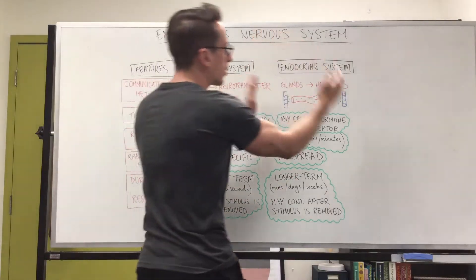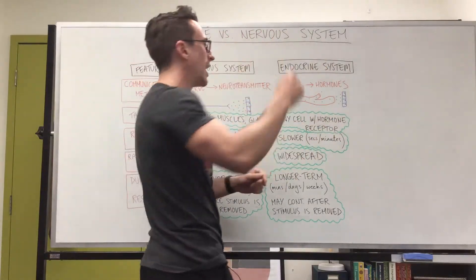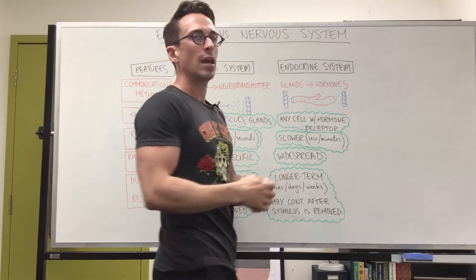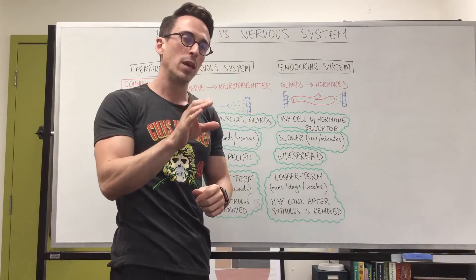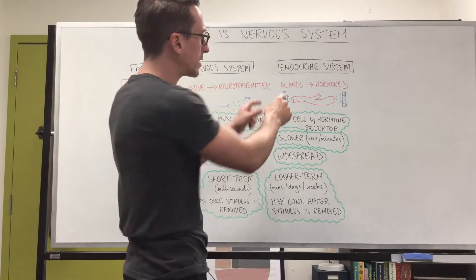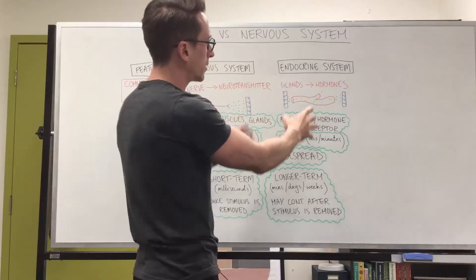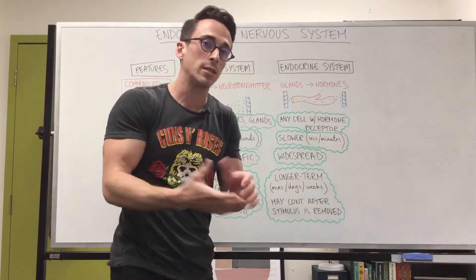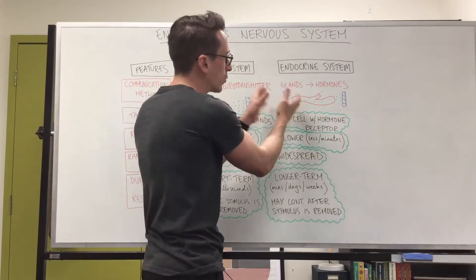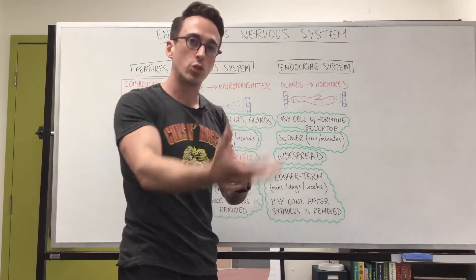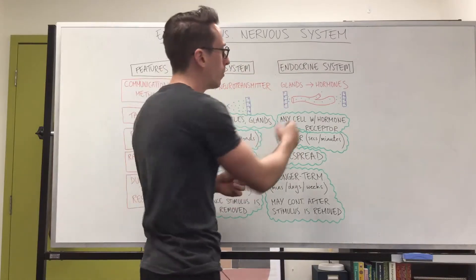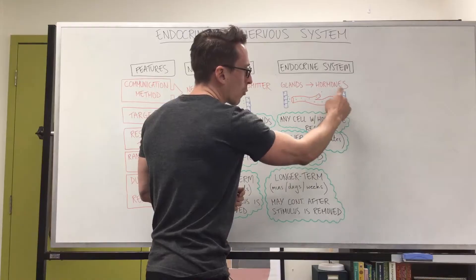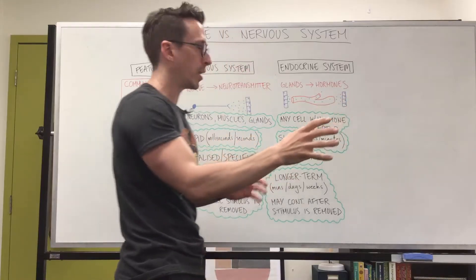When it comes to the endocrine system, its target is any cell in the body that has a receptor for that hormone. As you can see here, cells or glands release chemicals termed hormones into the bloodstream for distribution around the entire body.